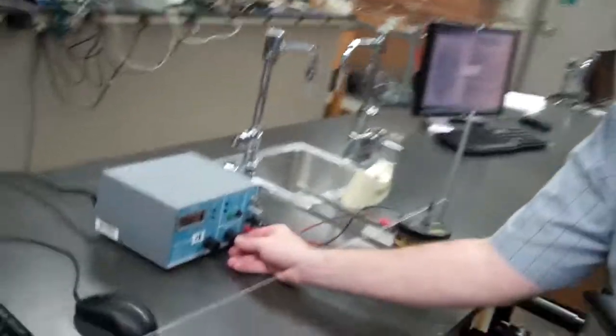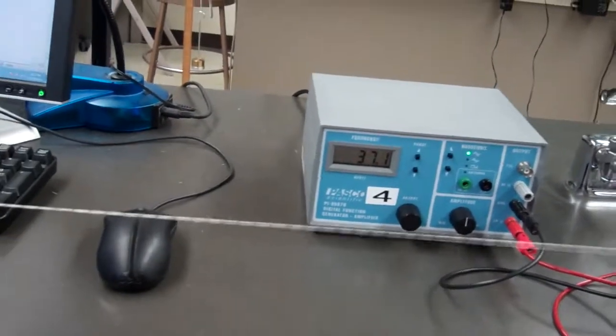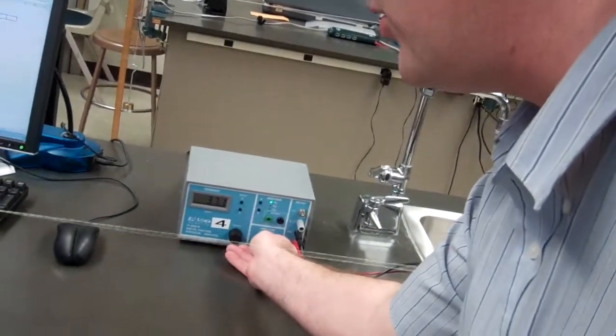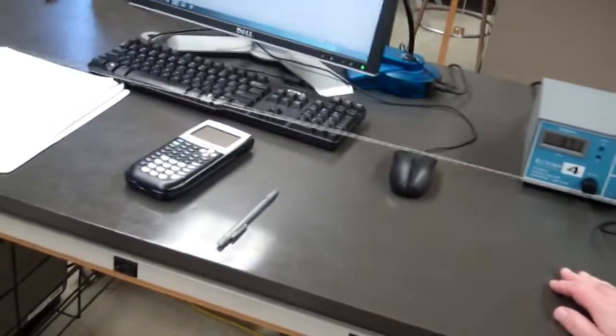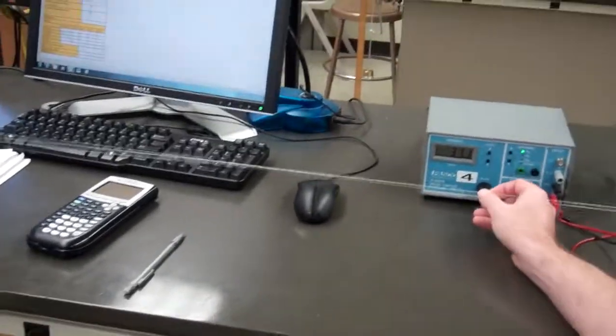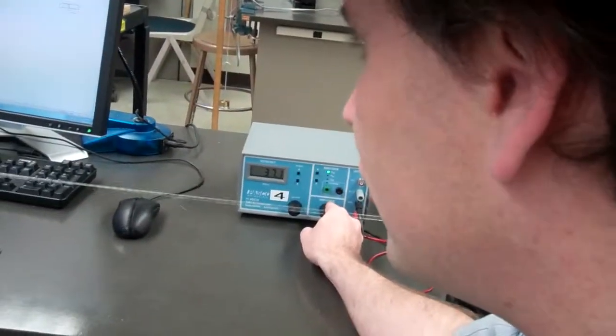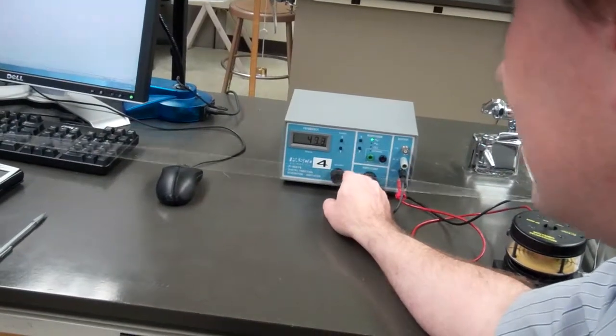The thing that people have a hard time with is, you set the amplitude here to about noon. And what you're going to do is you adjust the frequency until you get what's called a standing wave. The first one we're going to get is a standing wave where n equals 2. We're going to skip the n equals 1 because it's hard to do n equals 1, as you'll see.